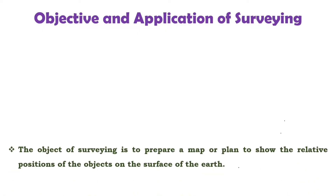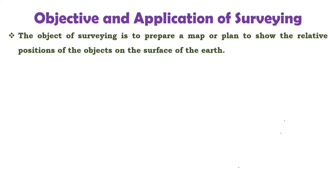Now let us see the objective and application of surveying. The main objective of surveying is to prepare a map or plan to show the relative position of objects on the surface of earth. In any civil engineering project, the first thing is to prepare the plan or map of that particular area where we need to develop the infrastructure.